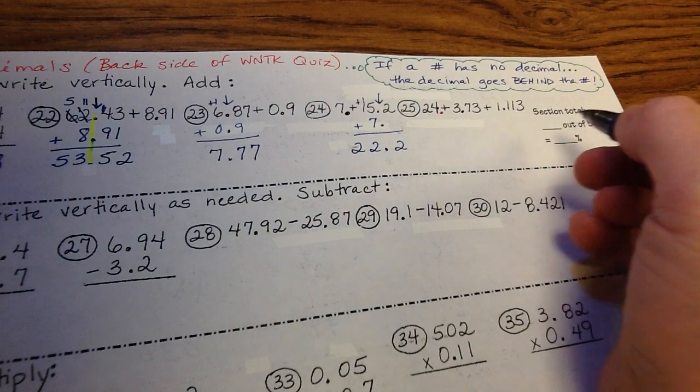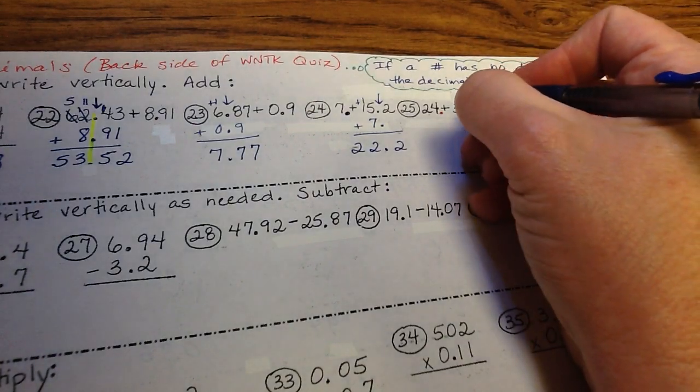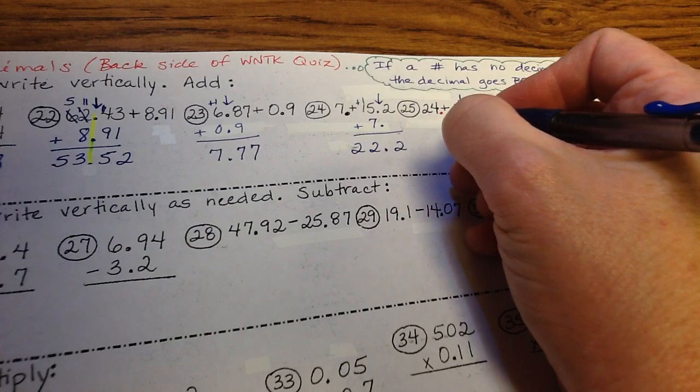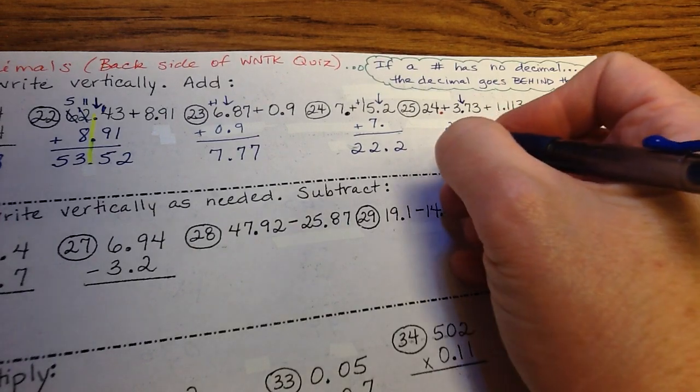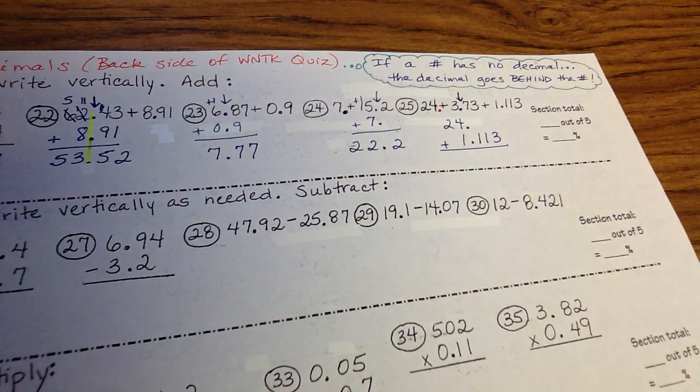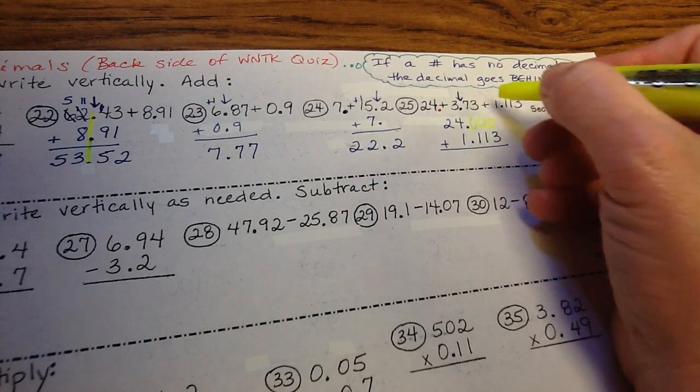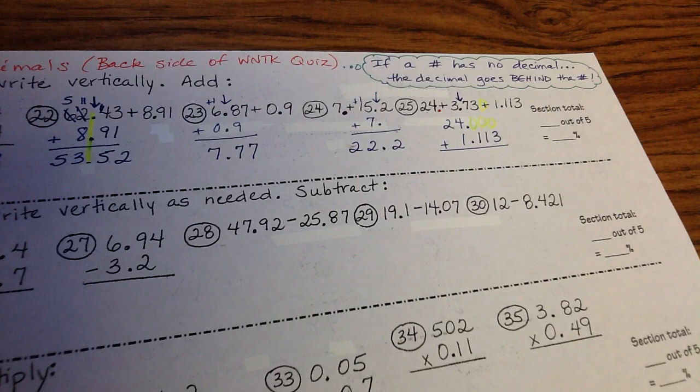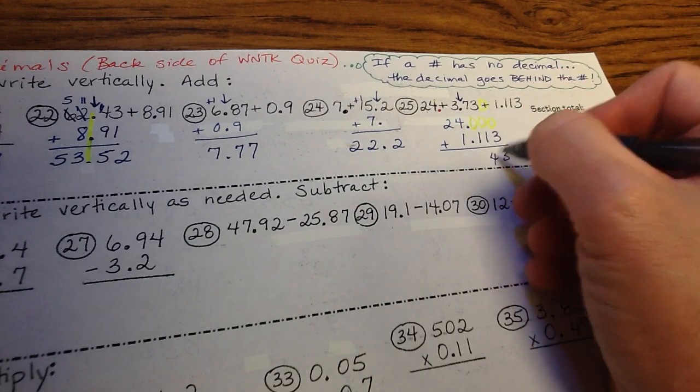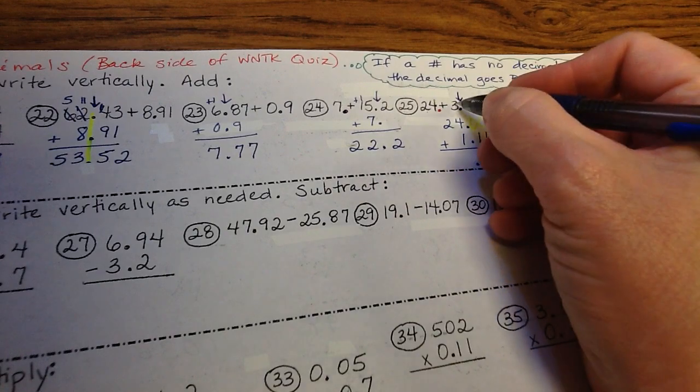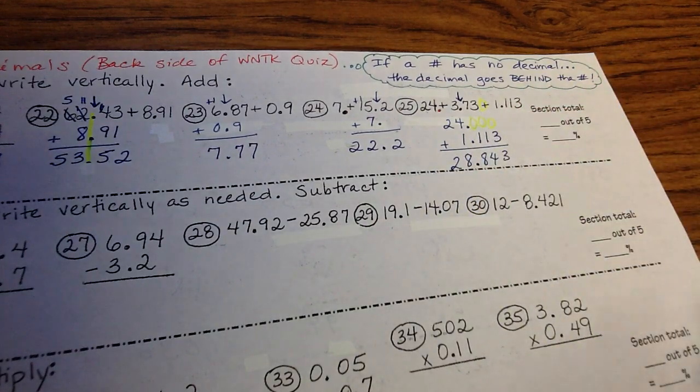Did you notice the cute pattern? We've got 7.77 and 22.2. Kind of fun. Lots of patterns to notice in life, and they will help you. So just look for those. Next, we've got three numbers to add. And sometimes that was the problem for students. They didn't realize that they had three numbers to add. So I'm going to line them up all in this middle area, right underneath this first number. So the 24 is going to line up here, and the 1.113 is going to line up here. Now, if it bothers you that you've got these spaces, you can always fill in with zeros. So if you wanted to fill in with zeros, you can, but you don't need to. 0 plus 0 plus 3 is 3. 3 plus 0 plus 1 is 4. 7 plus 0 plus 1 is 8. Decimal straight down. 3 plus 4 plus 1 is 8. And 2. 28.843.